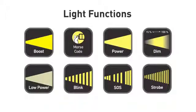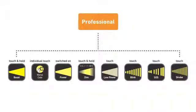Next, let's take a look at the different light functions in each light program. In the professional light program, we have 8 different light functions: from boost, to Morse code, to full power, to low power, to low power dim, blink, SOS, and strobe.